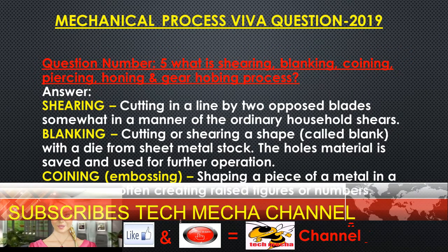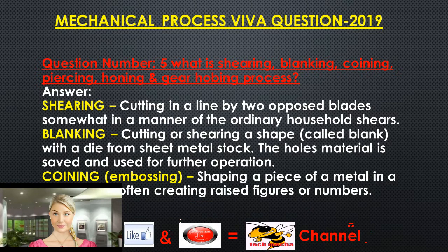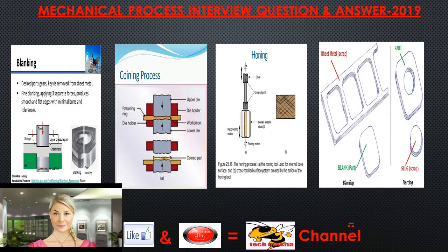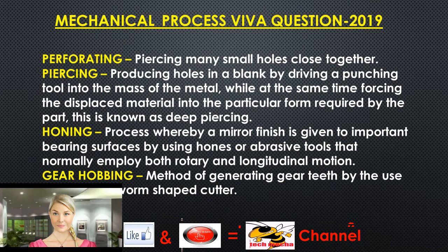Question 5: What is shearing, blanking, coining, piercing, honing, and gear hobbing process? Shearing is cutting in a line by two opposed blades, somewhat in the manner of ordinary household shears. Blanking is cutting or shearing a shape, called a blank, with a die from sheet metal stock; the hole material is saved and used for further operations. Coining or embossing is shaping a piece of metal in a mold or die, often creating raised figures or numbers. Perforating is piercing many small holes close together.